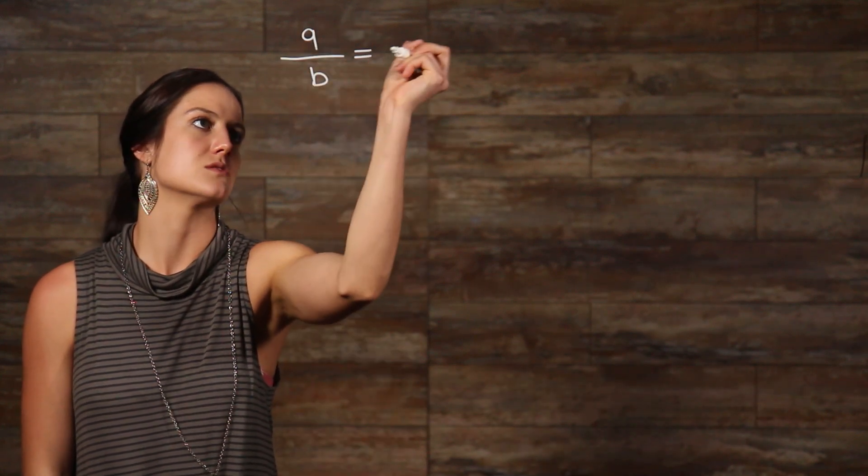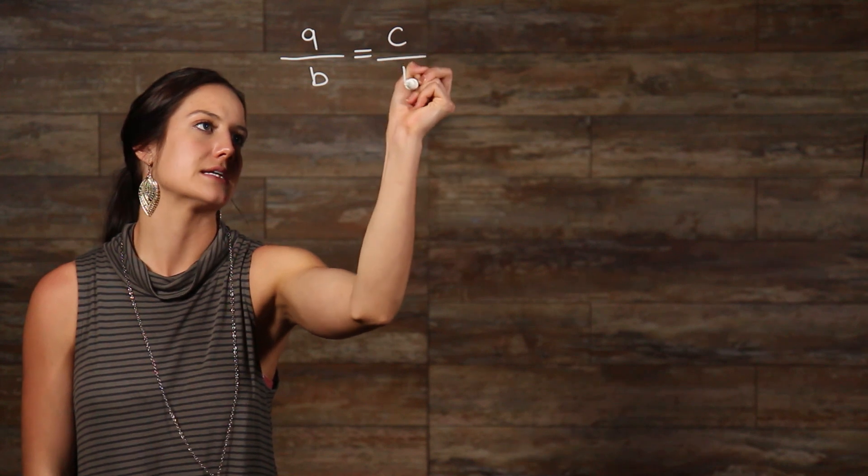When cross multiplying fractions, the name sort of hints at how this is actually done. You literally multiply across. Let's say you have two fractions that are set equal to each other, so A over B is equal to C over D.